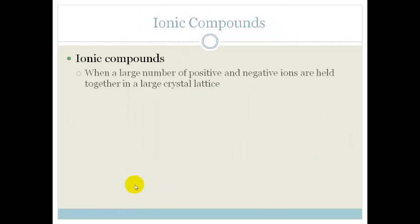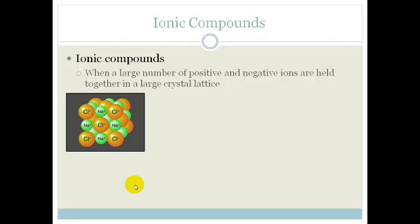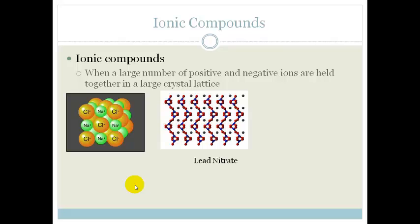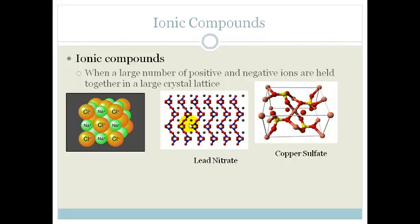Ionic compounds however, when a large number of positive and negative ions are held together in a large crystal lattice, we call it an ionic compound. So for example the first one here is sodium chloride, table salt. This is lead nitrate. Another one that is interesting is copper sulfate. And this is potassium permanganate.